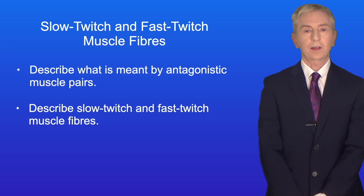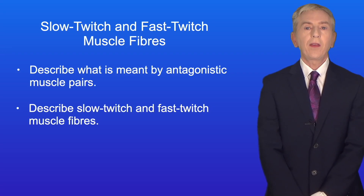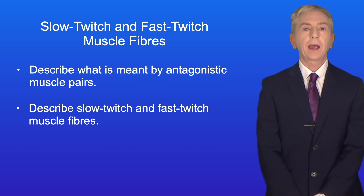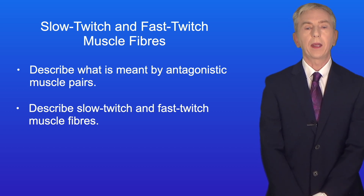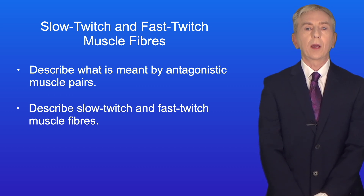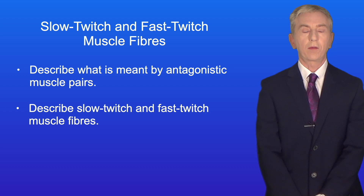Hi and welcome back to Free Science Lessons. By the end of this video, you should be able to describe what's meant by antagonistic muscle pairs, and you should also be able to describe slow twitch and fast twitch muscle fibers.